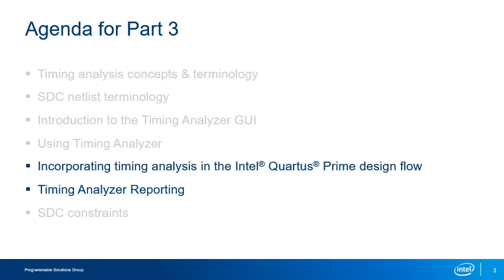Here is the agenda for this course. In the first part, we looked at basic timing analysis concepts and terminology used in Timing Analyzer, including terminology used to select nodes from the SDC netlist for targeting timing constraints. In the second part, you were introduced to the Timing Analyzer GUI and its use. In this part, you will learn how to incorporate Timing Analyzer into the Intel Quartus Prime design flow and take a closer look at Timing Analyzer's reporting features. In the final part, available on the Intel training website, you will learn about SDC constraints required to fully constrain a design as well as optional constraints.